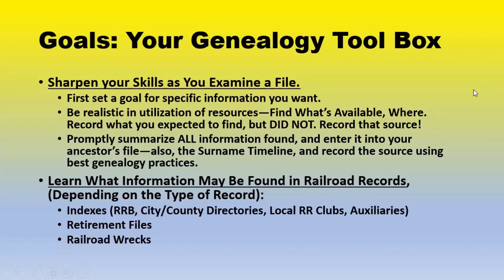Let's talk about the goals I have for your genealogy toolbox. Today I'm hoping you remind yourself again to sharpen your skills as you examine a file. First, set a goal for specific information you want — be realistic. Find out what's available in the first place and where it's available. Record what you did not find and record that source; it's going to be valuable to you later on. Promptly summarize all the information you find, enter it into your ancestor's file, into the surname timeline, and record that source. Learn what information may be found in railroad records, depending on the type of record you expect.